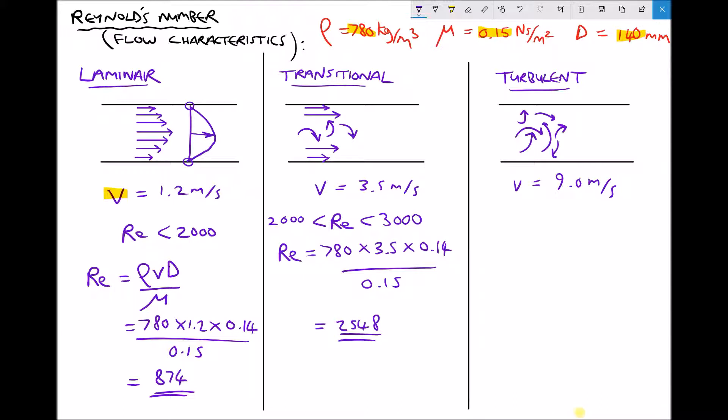Let's move on to our final example then, which is turbulent flow. Turbulent flow is characterised by a Reynolds number that's greater than 3,000. Values for Reynolds number can run into the millions or even the hundreds of millions, but anything over 3,000 would tell us that we have turbulent flow. Let's run the calculation. We have Reynolds number equals 780, times our velocity this time which is 9 metres per second, times our pipe diameter 0.14, all divided by our viscosity of 0.15, giving us a Reynolds number this time equal to 6552.